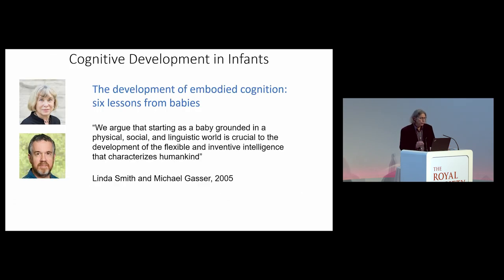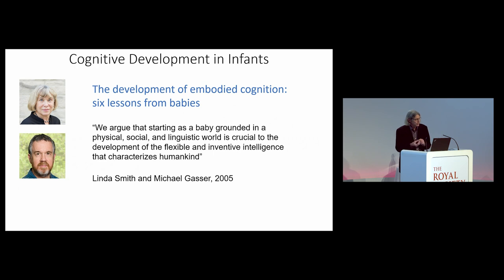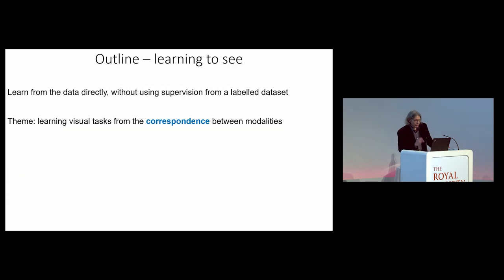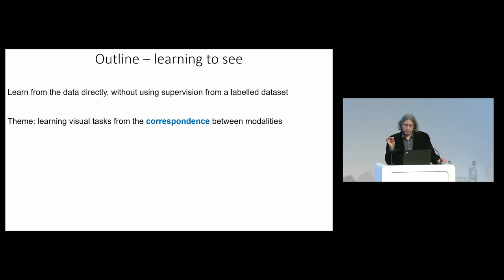This also ties in with what's been found by psychologists who study cognitive development in infants — the importance of data from the physical world in order to develop intelligence. One paper gives six lessons in order to develop intelligence in children: lesson number one is be multimodal. So I'm going to be multimodal. What I'm going to show next is how machines can learn directly from the data without having to have a labelled dataset. I'm going to pick out the theme of correspondence between modalities, and show three different examples. This method of learning from the data is called self-supervision.